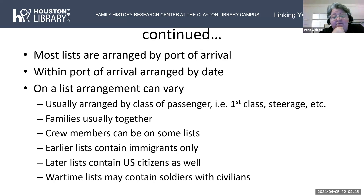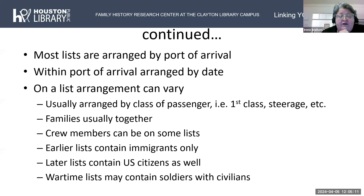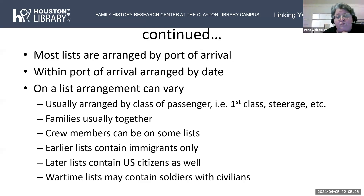The earliest lists contain immigrants only — not U.S. citizens or crew. Later lists do include U.S. citizens. Wartime lists — such as during the Spanish-American War, World War I, and World War II — contain soldiers alongside civilians, as the U.S. government would put injured or returning soldiers on any available boat leaving Europe, listing them with civilian passengers.